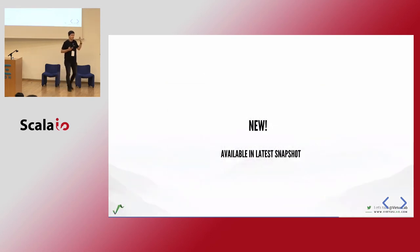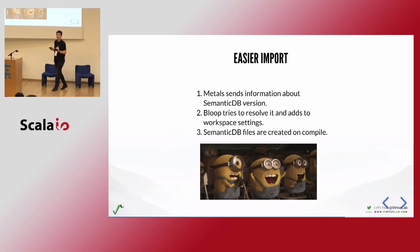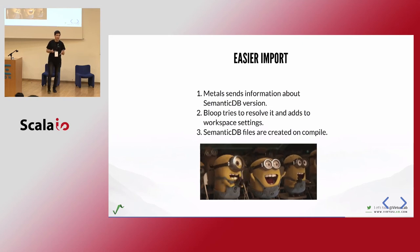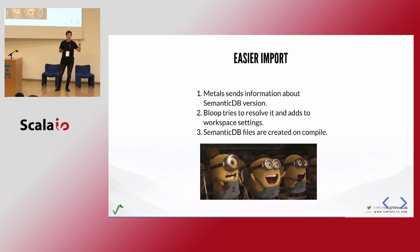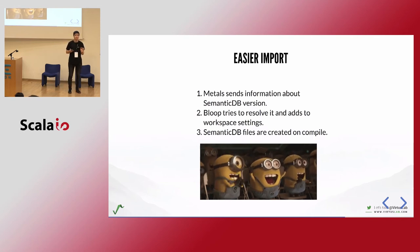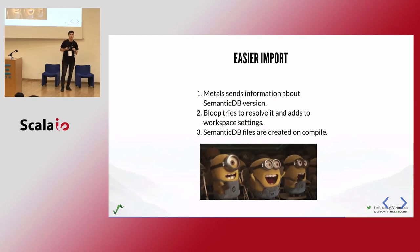Let's look at new things in the snapshot. Previously, we needed to add the SemanticDB compiler plugin in each build tool, which was sometimes not possible to do automatically — especially in complex builds. We moved all that to Bloop: Metals just informs Bloop which version of the compiler plugin it needs, Bloop downloads and uses it for any build. This really smoothens the initial experience for a lot of developers.